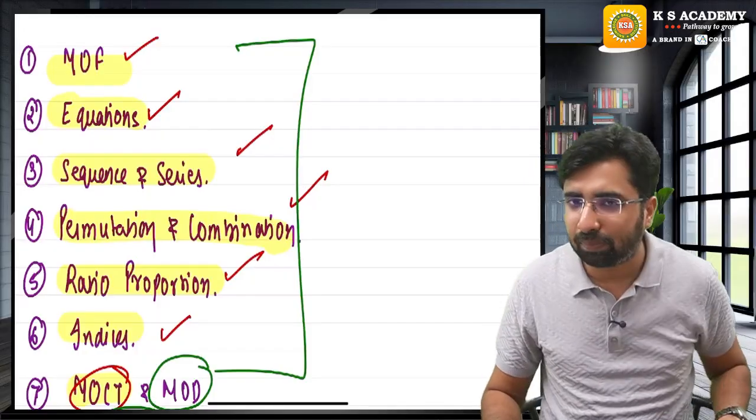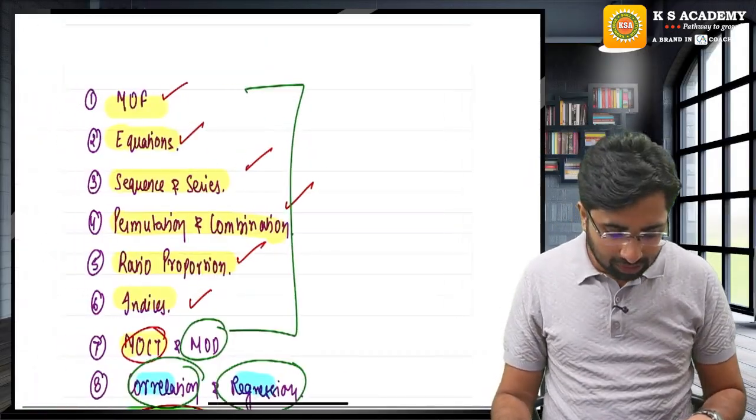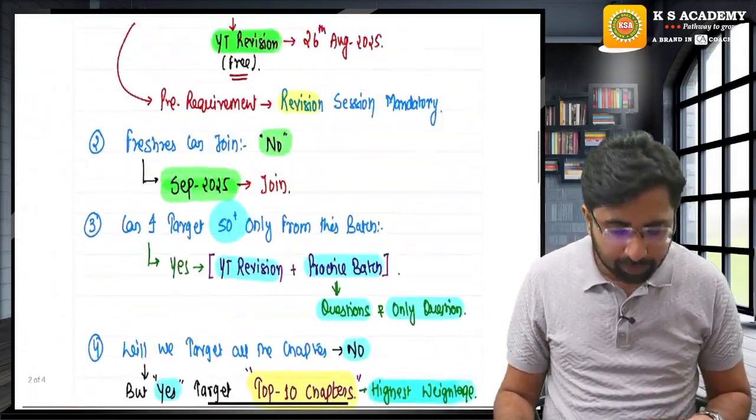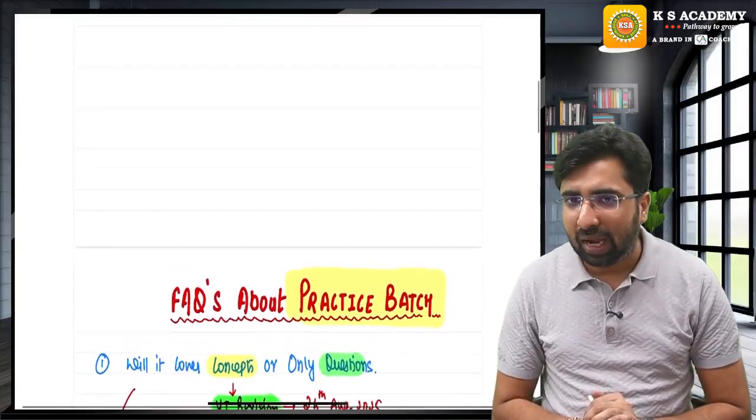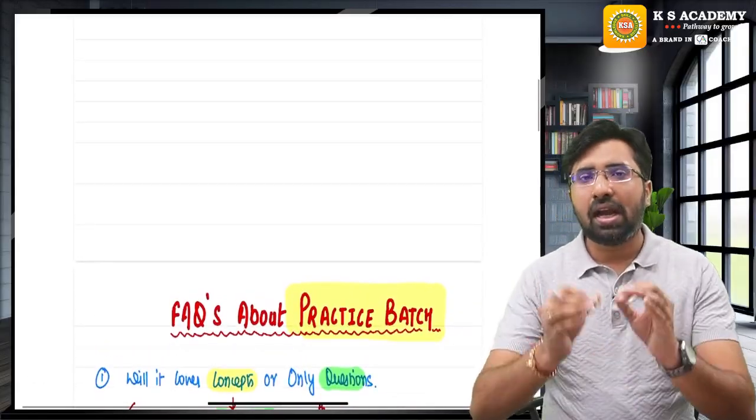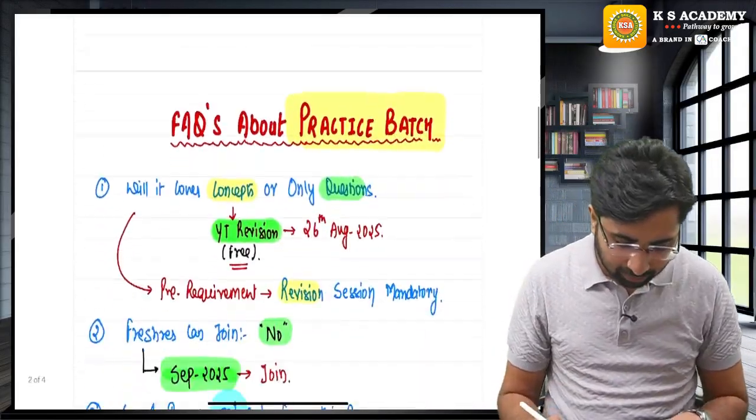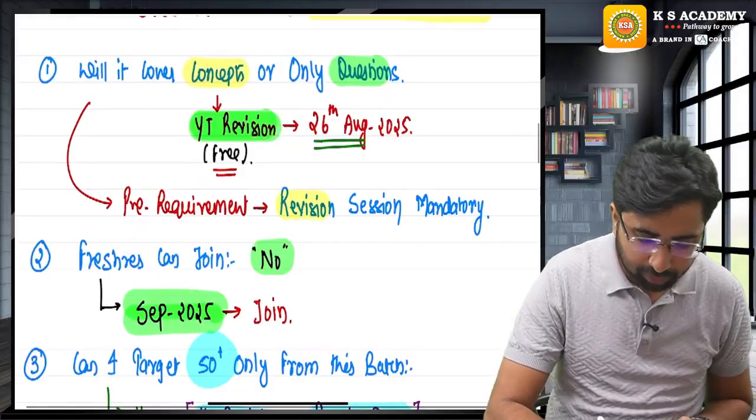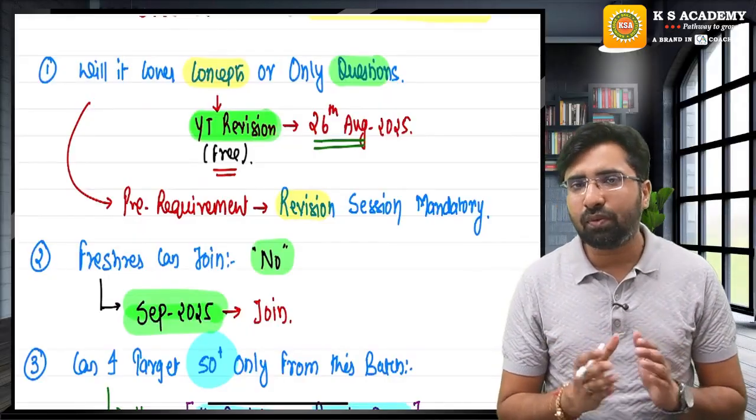This will increase the probability of you getting passed in September 2025. So get set ready for this practice batch. Register now so that you can get the app access within 24 hours. We are starting this batch from the 26th of August.